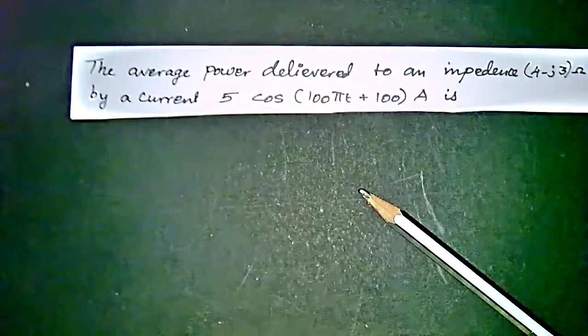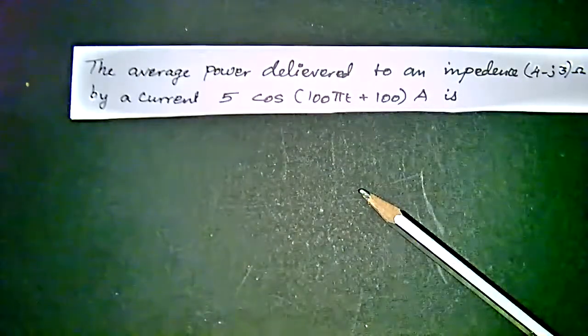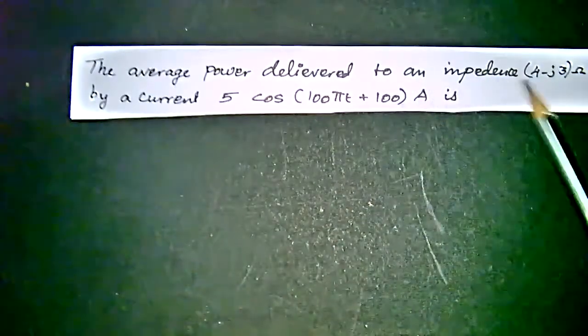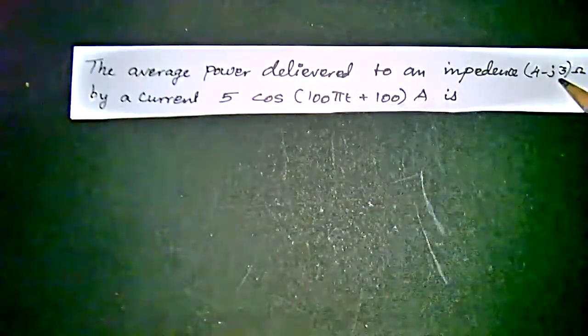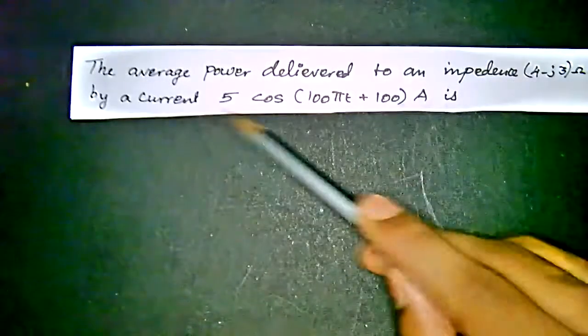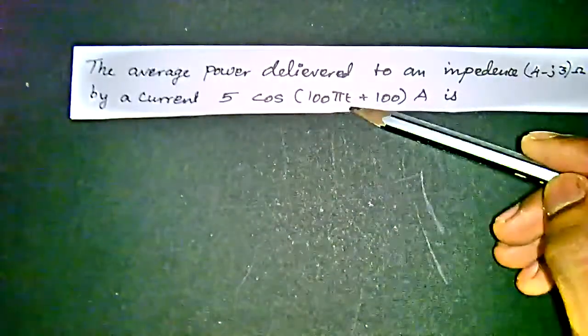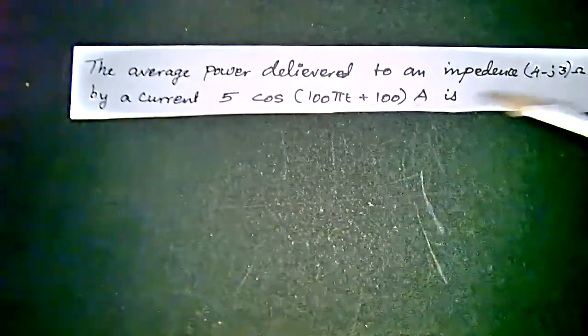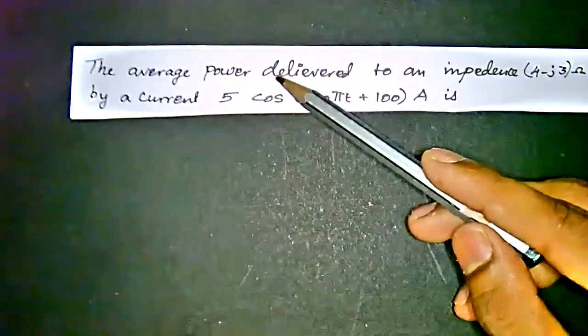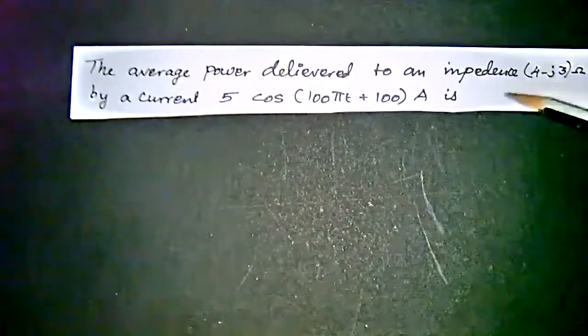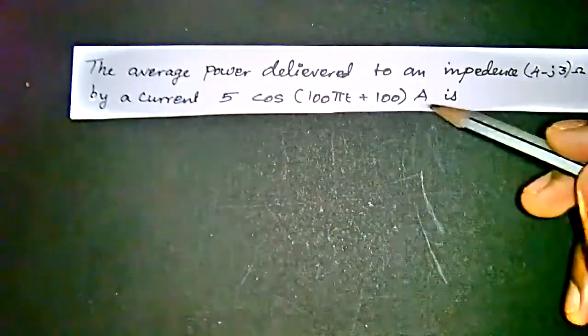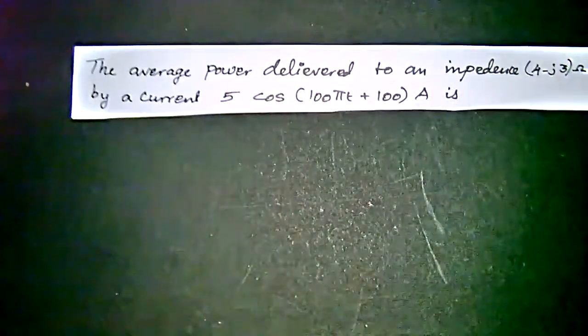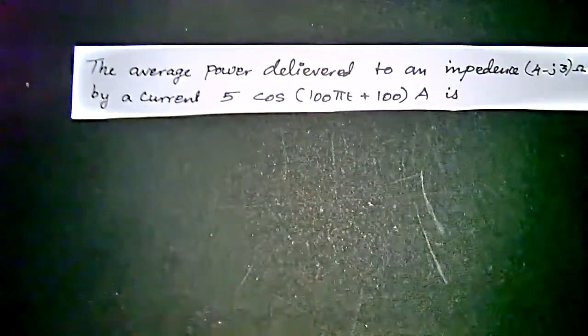Hi, we have got the problem as the average power delivered to an impedance 4 minus j3 ohms by the current of 5 cos 100πt plus 100 amperes. We have to find the power which is delivered because of this impedance by having the current in that impedance, so we have to find the power.